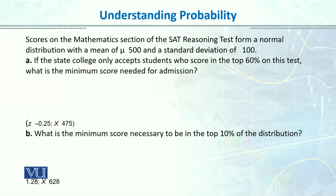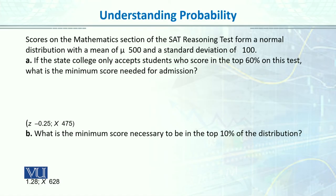Let's do an example in a concrete way so you can understand it. Here is the question: Scores on the mathematics section of the SAT Reasoning Test form a normal distribution with a mean of 500 and a standard deviation of 100.